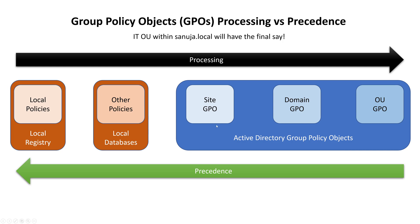Then it looks for any site GPOs, domain GPOs, and organizational unit GPOs within the Active Directory Group Policy Objects on your server. So it takes the local policies first and applies them, then looks for any other policies in local databases and applies those next, then site GPOs, domain GPOs, and organizational unit GPOs apply in that order. Every time one of these policies gets updated, if those policies are overriding the previous ones, it simply overwrites whatever is already there.